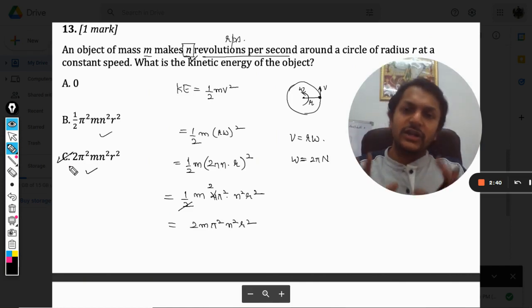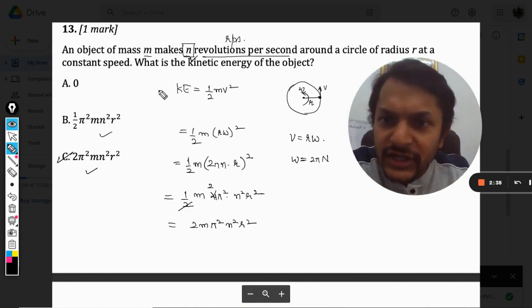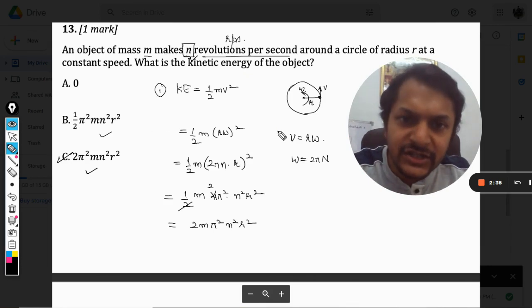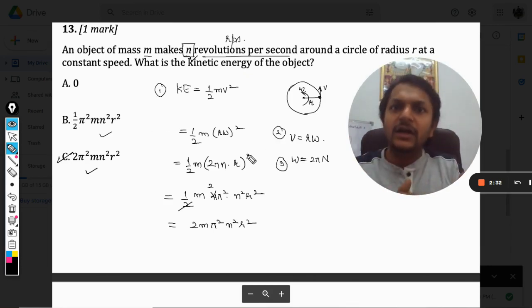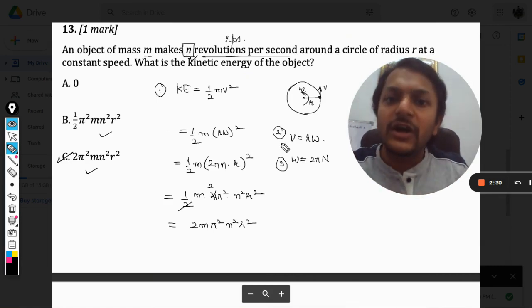So there are three formulas that we are using. Number one is for kinetic energy, number two is for velocity, and number three is for omega, and we want to convert it into revolutions per second.